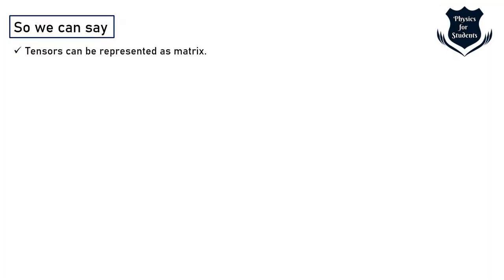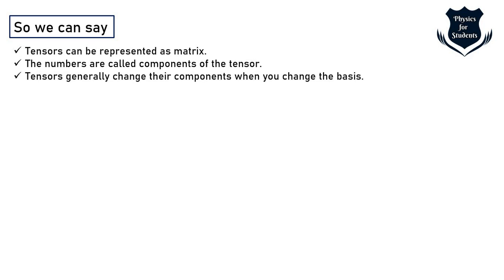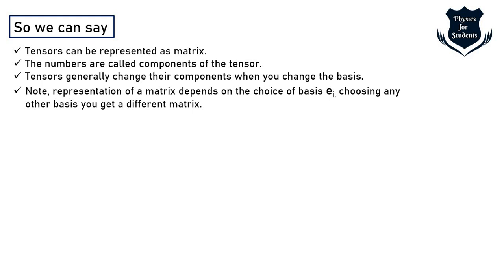So what we can see that tensors can be represented as matrix we can also see that numbers are called the components of the tensor. Tensors generally change their components when you change the basis and this is important representation of a matrix depends on the choice of the basis so we have selected e sub i if we select any other kind of a basis then we get a different matrix.